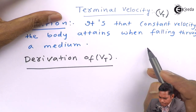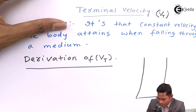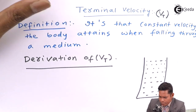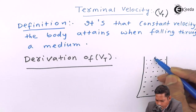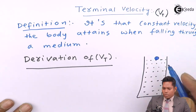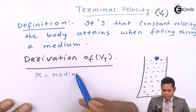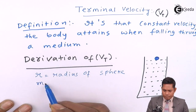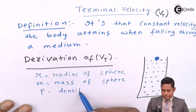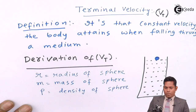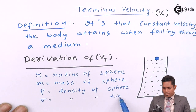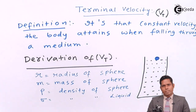Let us draw the diagram. The medium is shown, and we release a spherical ball inside it. The radius of the sphere is r, m is the mass of the sphere, rho (ρ) is the density of the sphere, sigma (σ) is the density of the liquid, and g is the acceleration due to gravity.